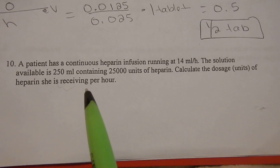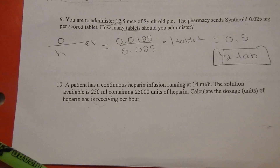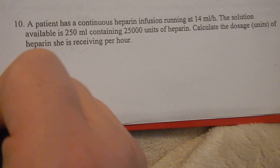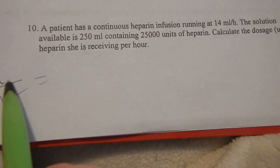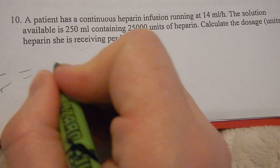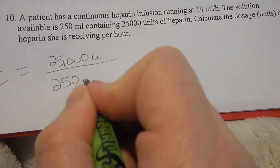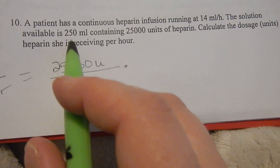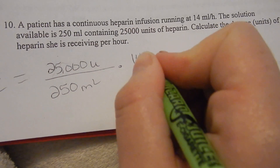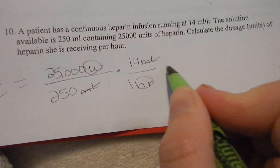Calculate the dosage of heparin she's receiving per hour. So we know we're looking for units per hour. We're going to start with the units on top. Here we have 25,000 units over 250 mL. Remember, you don't have to get them both — just start with the one on top and keep going. So we have 250 mL. What else do we have that's mL? We have 14 mL over 1 hour.